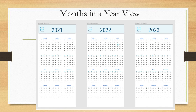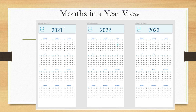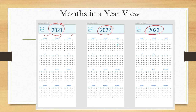Let us first see how the months in a year looks on the interface. Three year-wise views are shown — for 2021, 2022, and 2023. For each year, the months are arranged in a 3-by-4 matrix with three columns and four rows, showing months along with the days within each month.